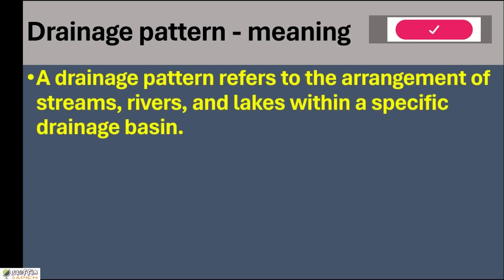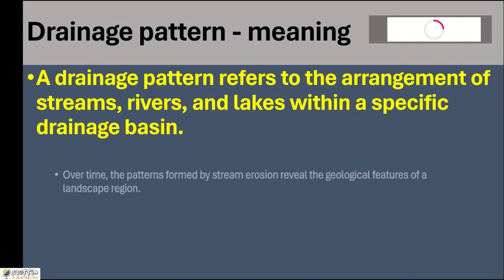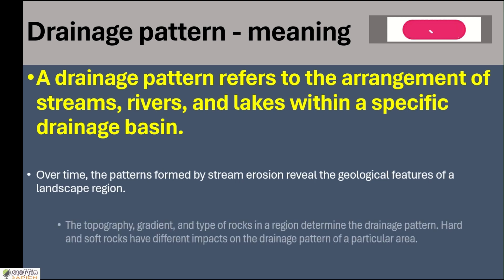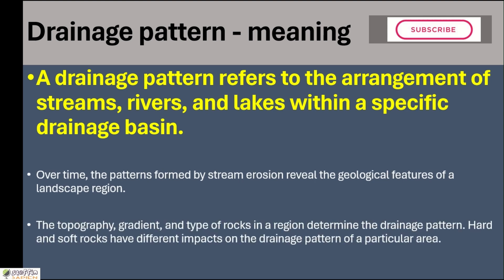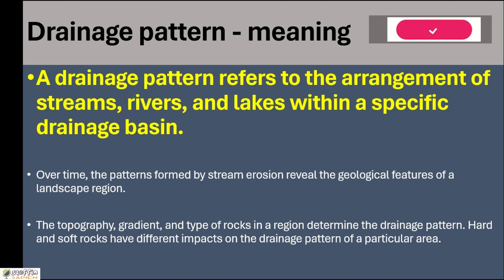A drainage pattern refers to the arrangement of streams, rivers and lakes within a specific drainage basin. It means how the streams in a particular drainage basin appear when seen from a bird's eye view, or when we see the drainage system on a map — does it have any specific shape or arrangement? If there is any, that is what a drainage pattern is.